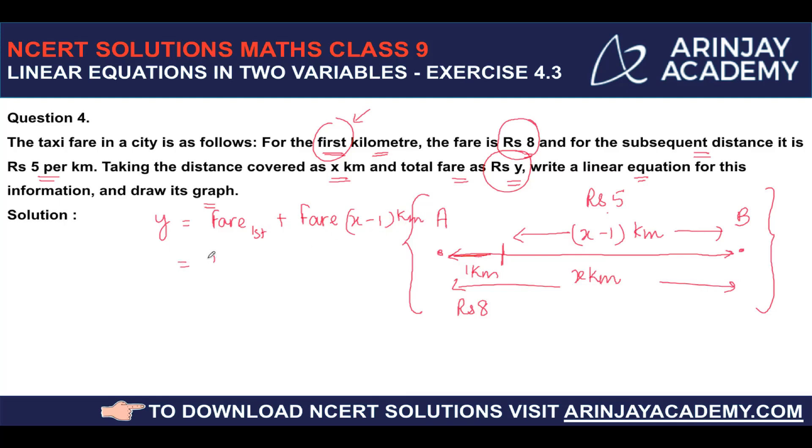Now for the first 1 kilometer, it is rupees 8 per kilometer, so 8 into 1. For the rest which is x minus 1 kilometer, the fare is 5 per kilometer. So it will be 5 multiplied by x minus 1.